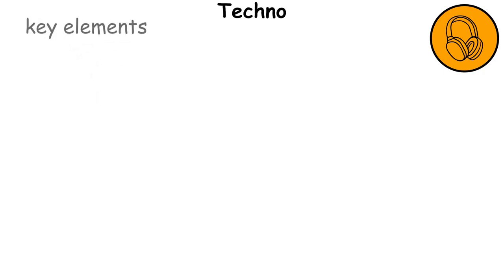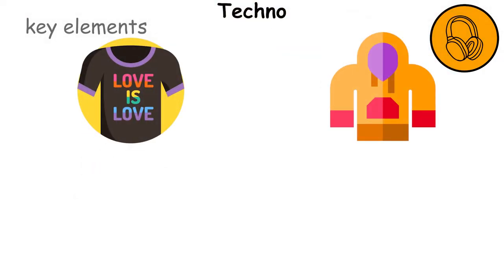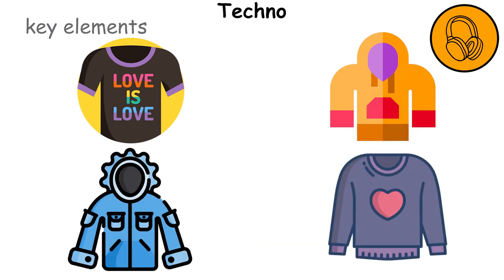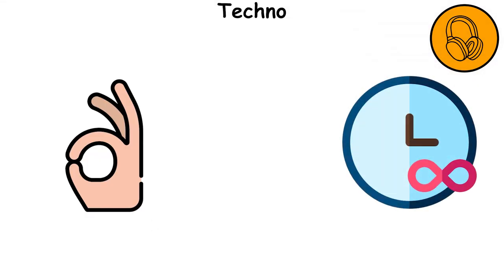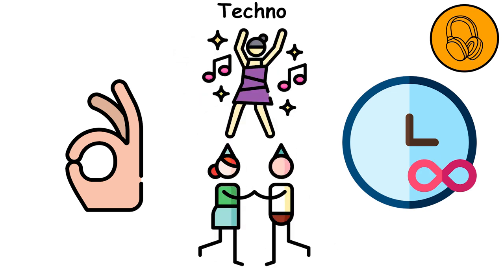The key elements of techno style include t-shirts, hoodies, jackets, and sweatshirts, often adorned with bold graphics and slogans that reflect the techno music scene. The clothing is designed for comfort and durability, making it perfect for long nights of dancing and celebrating.